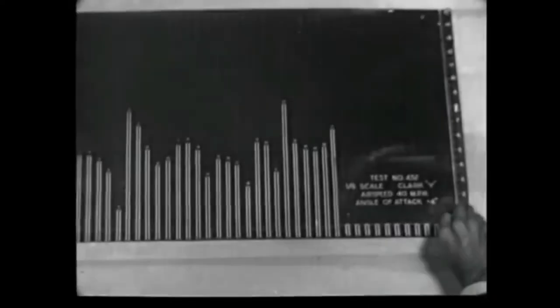The manometer tubes tell the story. Levels fluctuate slightly as minute variations in air speed or density occur. But the ratios are constant, and the position of the liquid in the tube shows both positive and negative values for the airfoil.